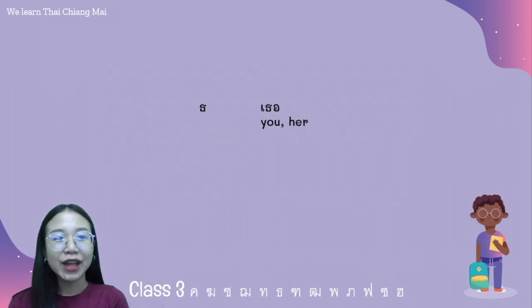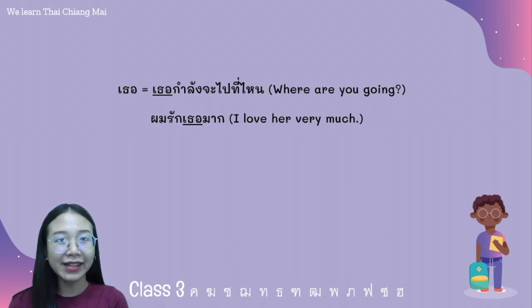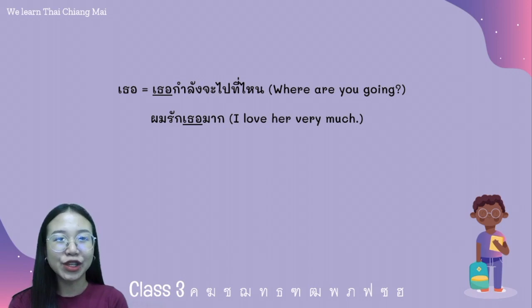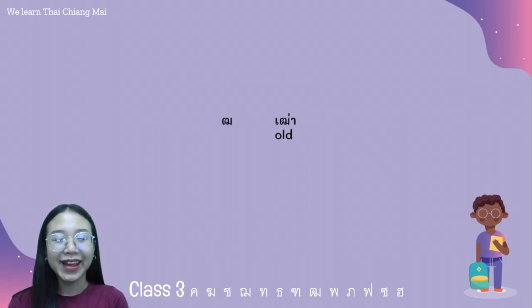And next, ทอทง. I'll give you the word ทอ. For example, ทาน กำลังจะไปที่ไหน — in this sentence, ทาน means 'you.' And another meaning of ทาน is 'her' — for example, ผมรักเธอมาก.